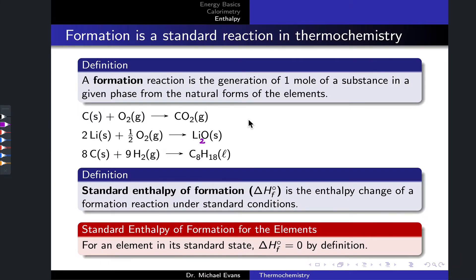When we measure the height of a mountain, we start from sea level — our zero of height — following a standard process to reach the summit. Similarly in chemistry, we start with a baseline enthalpy value of zero for the elements in their natural forms at standard state, and use a standard process called a formation reaction. Formation reactions are defined very precisely: specifically the generation of one mole of a compound in a given phase from the natural elemental forms of its constituent elements at standard state.